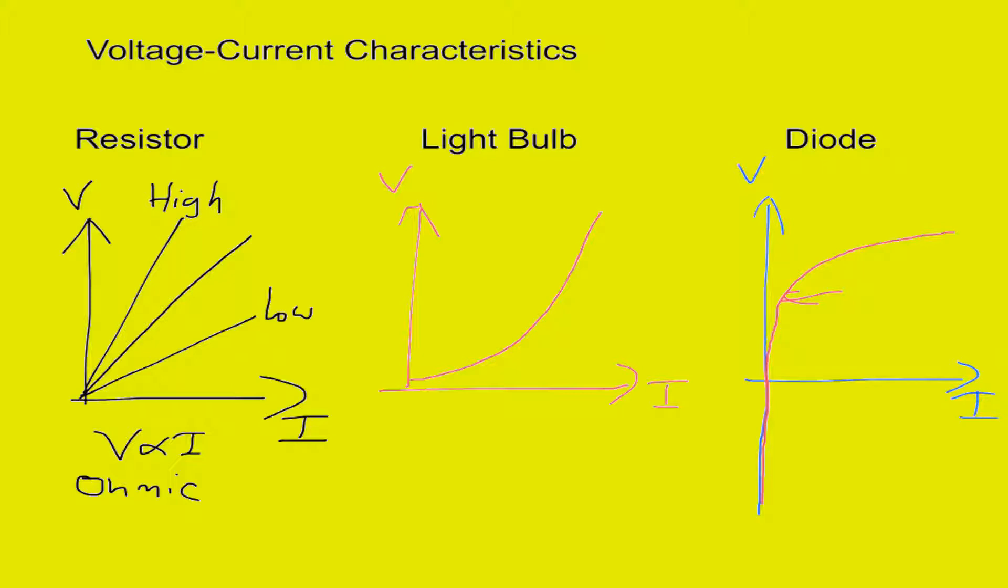So we can see that's distinct from the lightbulb, it goes in the opposite direction. Both the lightbulb and the diode are non-ohmic conductors. So in both of these cases, we would say they are non-ohmic. They don't obey Ohm's law. They don't have voltage proportional to the current.